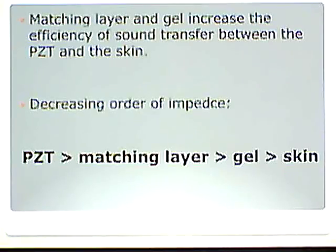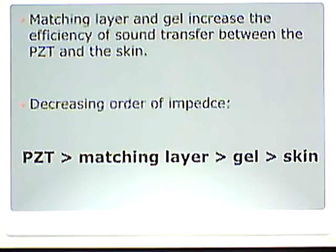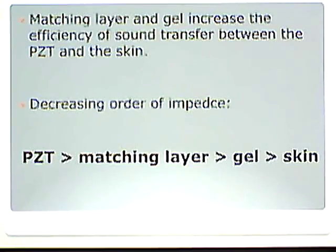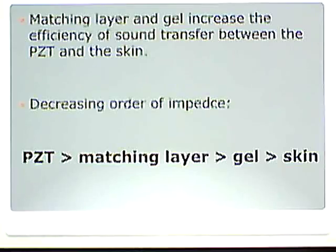Gel further increases the percentage of sound transmitted into and out of the body. We're coupling — bridging the gap — bringing everything together so that we have complete transmission of our ultrasound beam from the PZT through the matching layer, through the gel, and into the skin. The matching layer and gel increase the efficiency of sound transfer between the PZT and the skin. In decreasing order of impedance: PZT, matching layer, gel, skin. Without the matching layer and the gel, there's a great difference in impedance, so you'd have reflection. Stick the matching layer and gel in there and you have transmission.